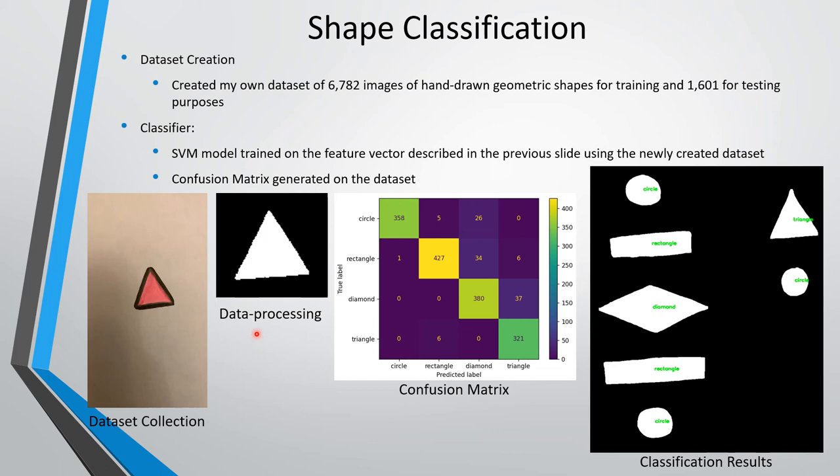I was able to create a training set consisting of around 6,700 images and a testing set consisting of around 1,600 images. To create the test set, I asked five different people to draw the four required shapes on a piece of paper and the same data processing procedure is done. The results of testing my trained model on the test set can be seen in the confusion matrix. As you can see, the model is performing well as most predictions are along the diagonal. And the weighted average precision and recall are both 93%. The classification results on the sample image can also be seen on the image to the right and all the shapes were predicted correctly.